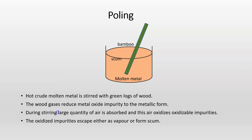The oxidized impurities escape either as vapor or form scum, and thus we have metal with a higher purity than it was earlier. The scum is removed by perforated lathe.